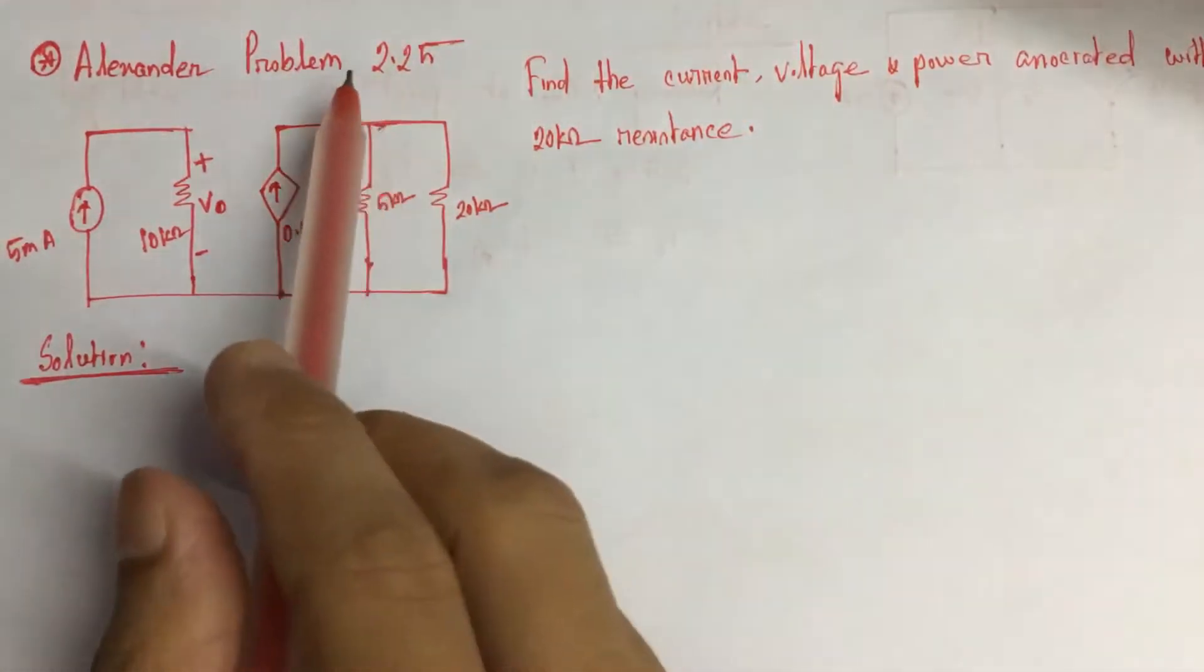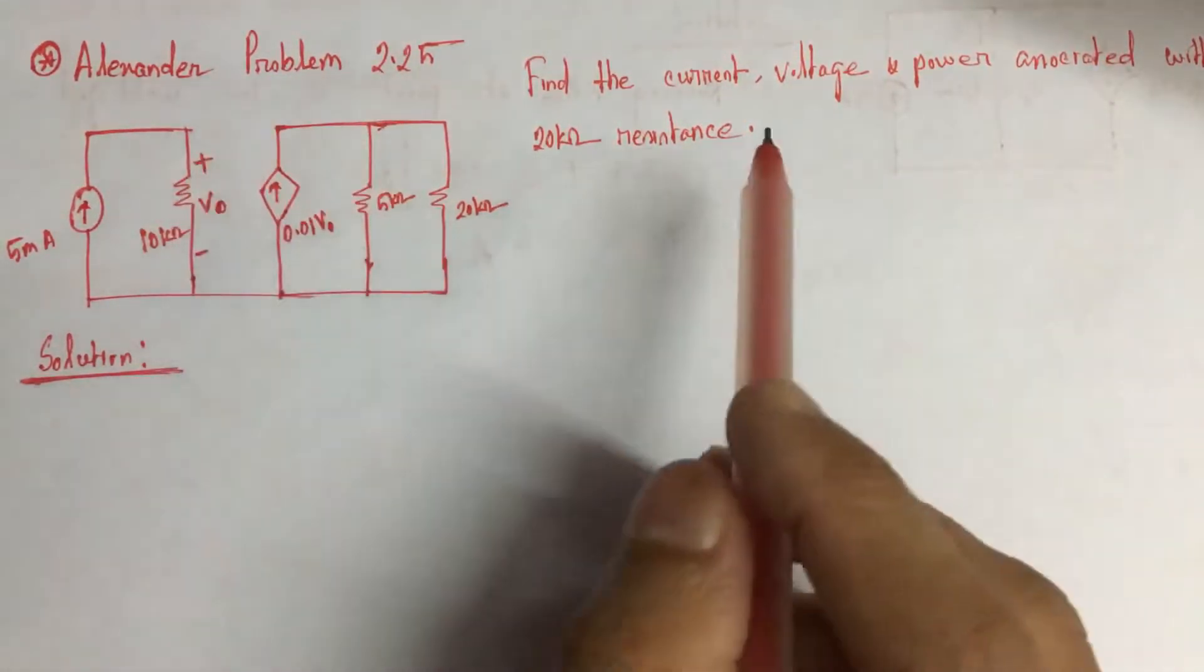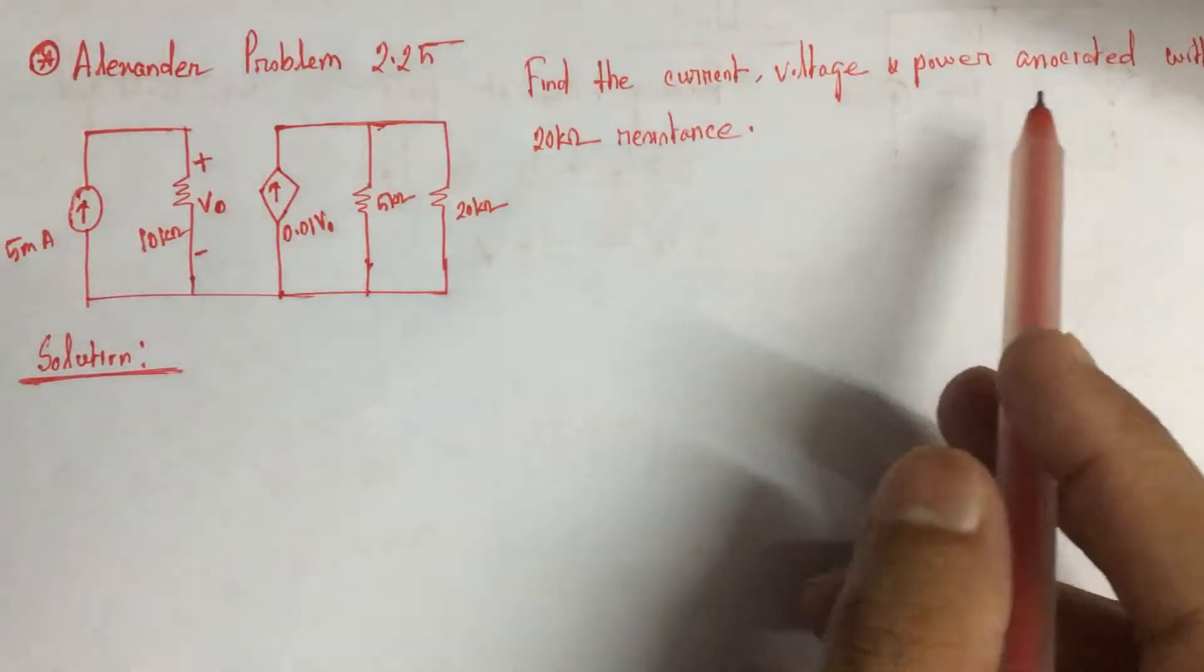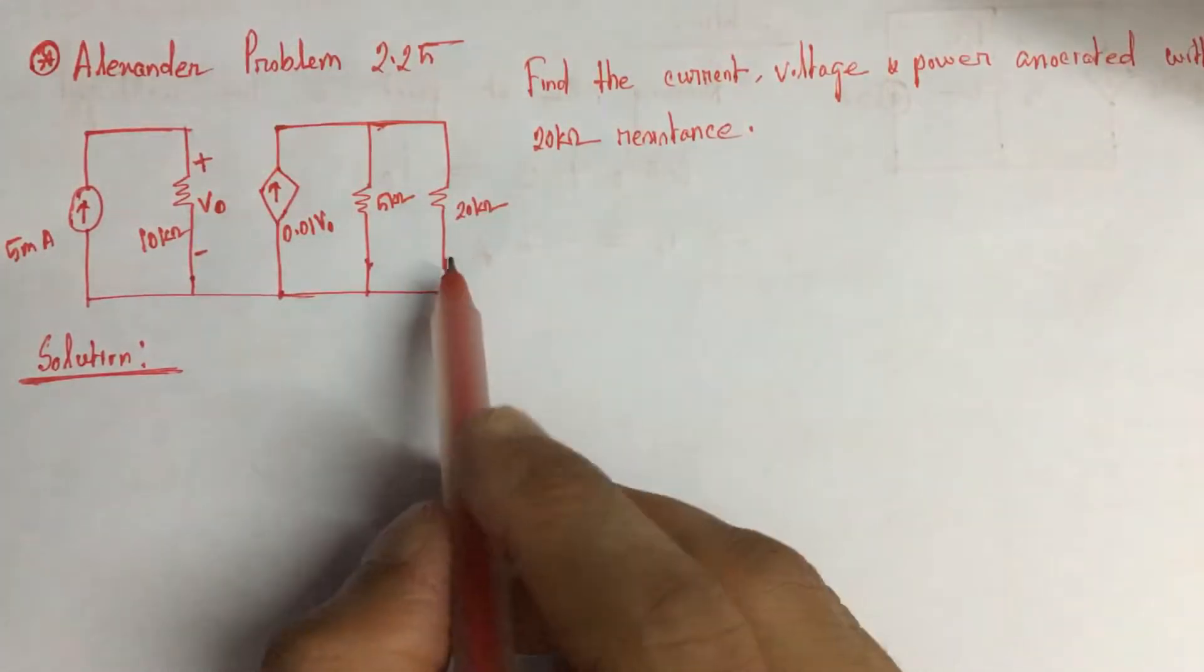Hi boys, today we will solve problem 2.25 from Alexander. We will find the current, voltage, and power associated with this 20 kohm resistance.